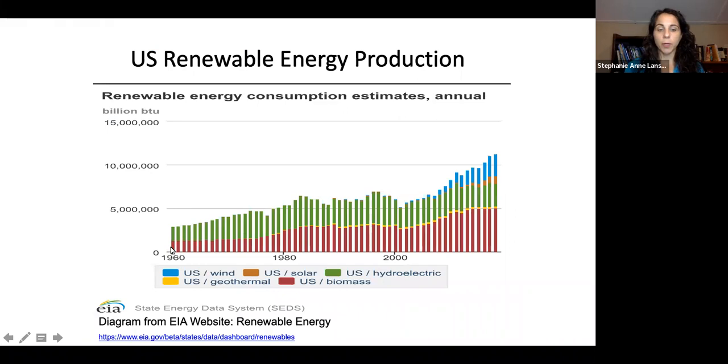Looking at renewable energy from the 1960s through 2020, geothermal is this little yellow slice. It's not very big, but it has stayed consistent. Our power plants were built in the 80s and 90s and are producing now, but we haven't been installing a lot more capacity like we have for biomass, hydroelectric, wind, and solar.